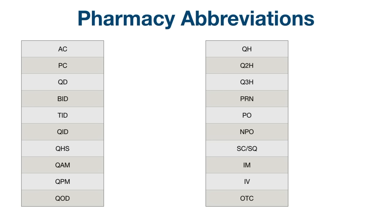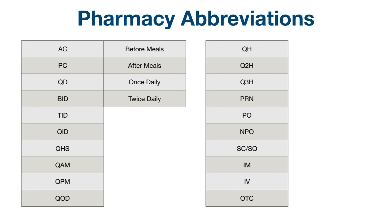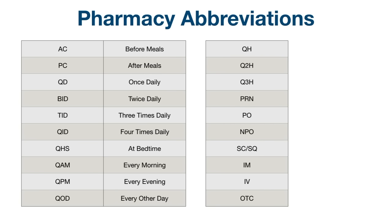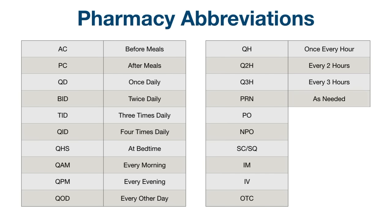Let's move on to abbreviations you might see associated with pharmacy. Most of these have to do with the frequency in which you give a medication. AC: before meals. PC: after meals — and the way you can remember this is A comes before P in the alphabet, so A stands for before meals and P stands for after meals. QD: once daily. BID: twice daily. TID: three times daily. QID: four times daily. QHS: at bedtime. QAM: every morning. QPM: every evening. QOD: every other day. QH: once every hour. Q2H: every two hours. Q3H: every three hours. PRN: as needed.